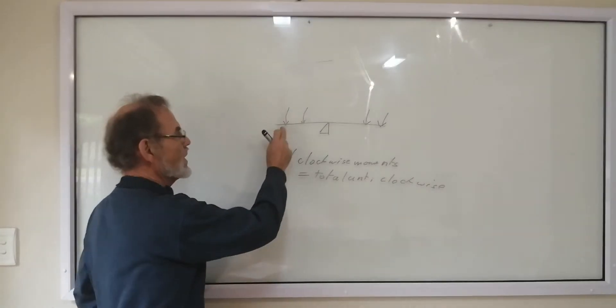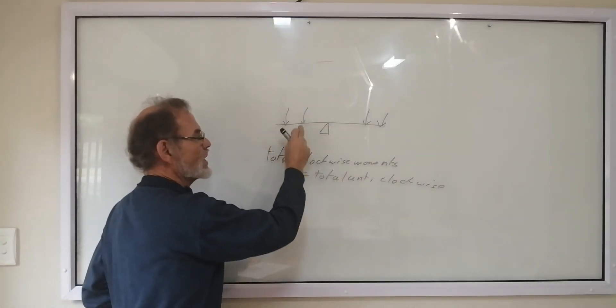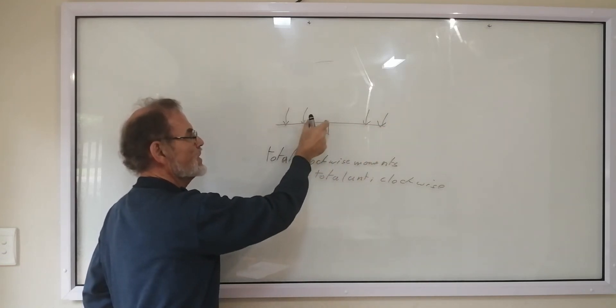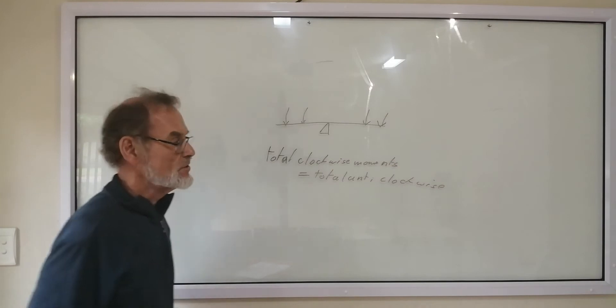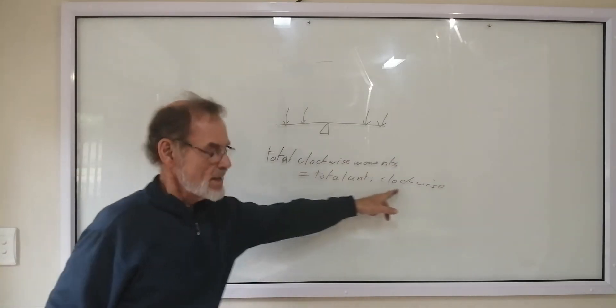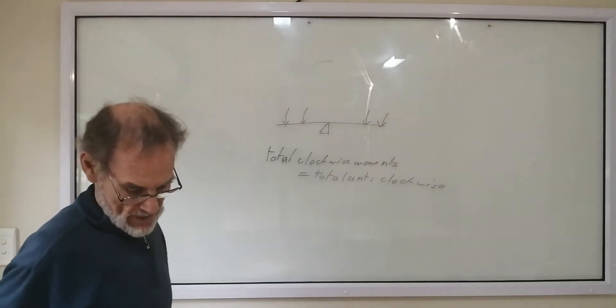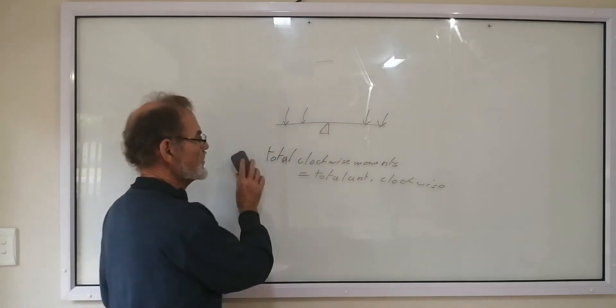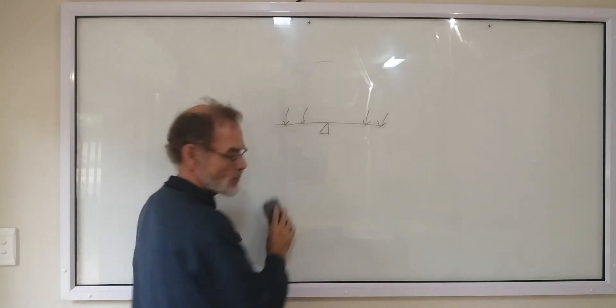When I say balance it, you'll find that there's one, probably one, either one unknown force here, or one unknown distance from the pivot here, that you have to determine with this equation. And then it will be balanced if you use the equation. So we can use this equation to solve problems.